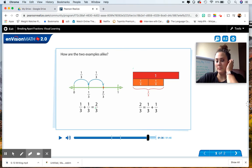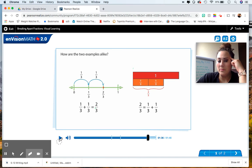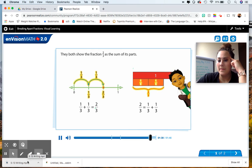How are the two examples alike? Well, let's think about that. How are the two examples alike? We have the same answer. Let's listen. They both show the fraction two-thirds as the sum of its parts.